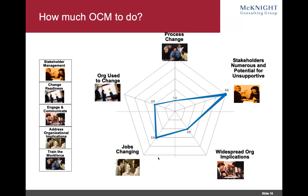How much OCM to do? I suggest you do an assessment. The metrics at a high level: are you making process changes as a result of this project — rate one through five. Do you have numerous stakeholders and high potential for unsupportive stakeholders? Is there widespread organizational implications or is it departmental? Are jobs changing or is the organization used to change — have they successfully dealt with change before, or have you wasted millions on projects that seemingly looked good but didn't get anywhere? These five things obviously map to the five areas on the left.